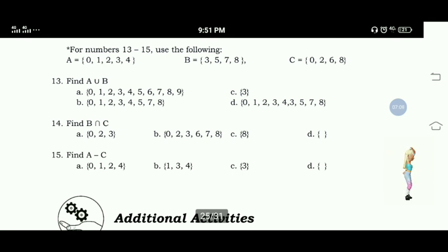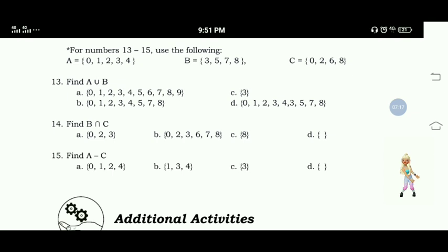For numbers 13 to 15, use the following: set A equals 0, 1, 2, 3, 4, set B is 3, 5, 7, 8, set C is 0, 2, 6, and 8. Number 13: Find A union B. Pagsasamahin natin ang elements ng A at saka ng B. This will have elements 0, 1, 2, 3, 4, 5, 7, and 8. Hindi na natin isusulat yung same number. We are going to list the element only once.